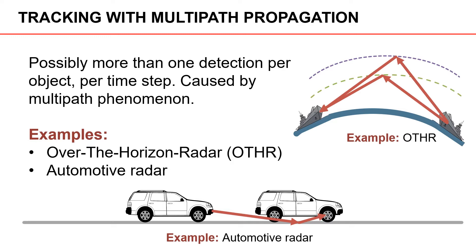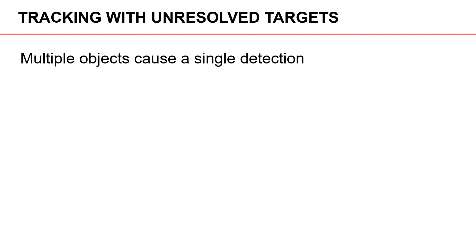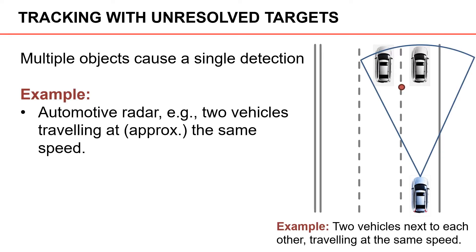A second example of tracking with multipath propagation is vehicle tracking using automotive radar. Here the radar signal is reflected off the road surface and then hits, for example, the undercarriage of the vehicle. In this way we get a radar detection; however, it is not the closest point of the object that we detect, which in this case would be the back of the vehicle. Another example where multipath effects arise is vehicle tracking with automotive radar.